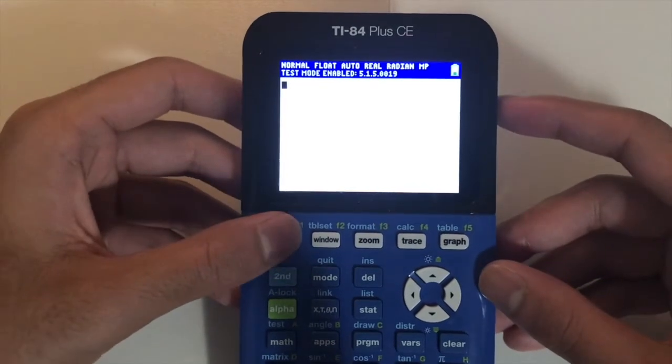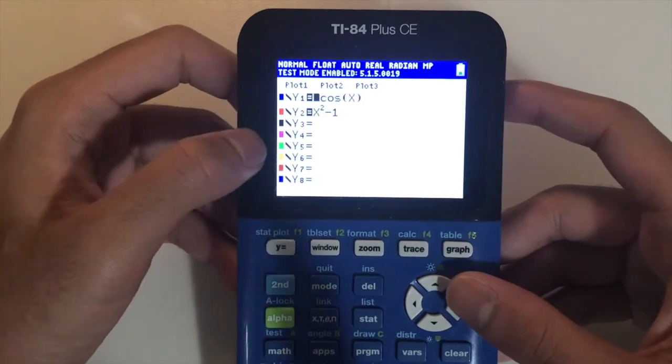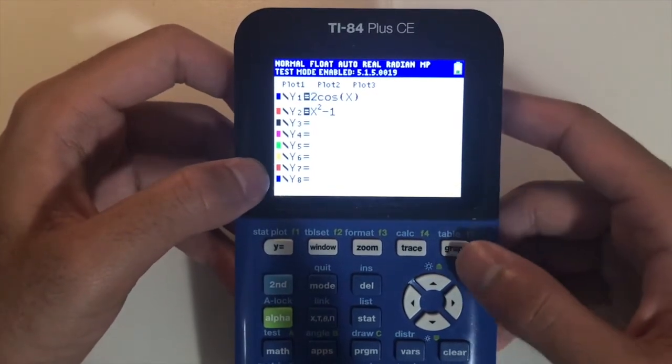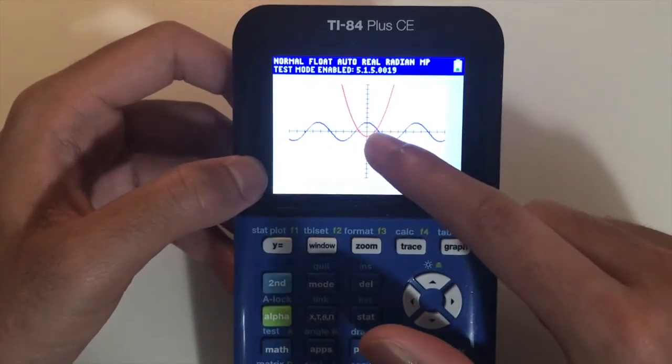Right now I've already inputted two different functions. The first one is 2cosx and the second one is x squared minus 1. If we see that on a graph, you can clearly see that there's two points of intersection.